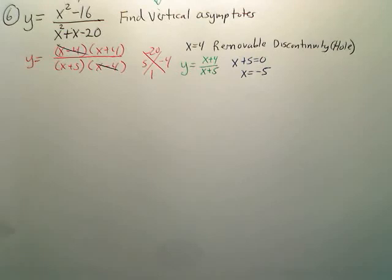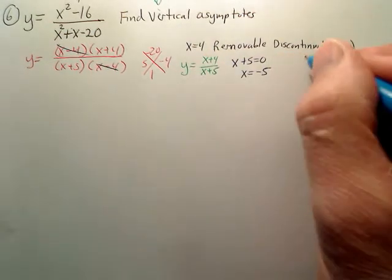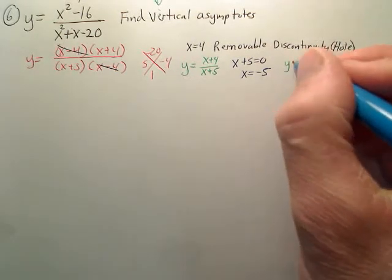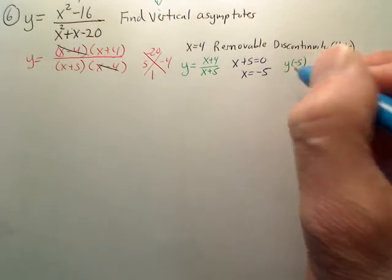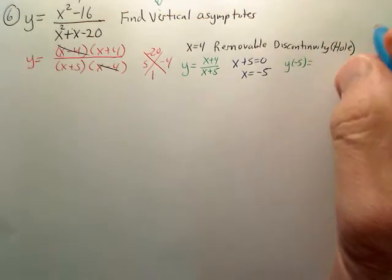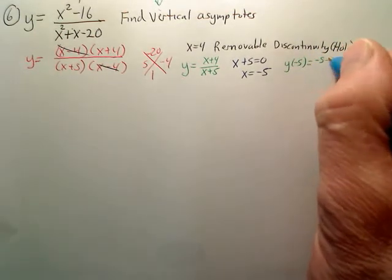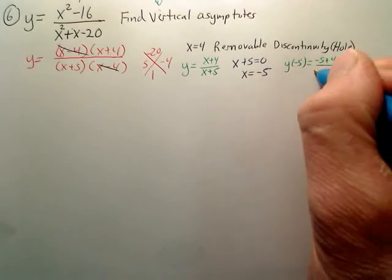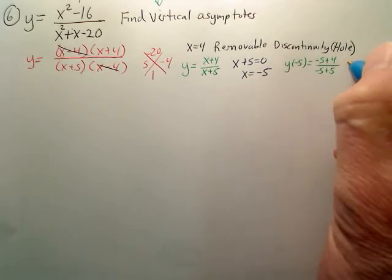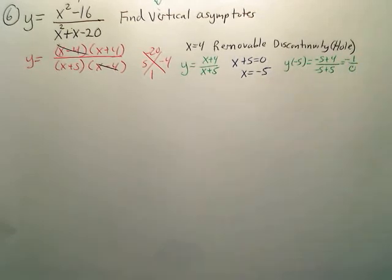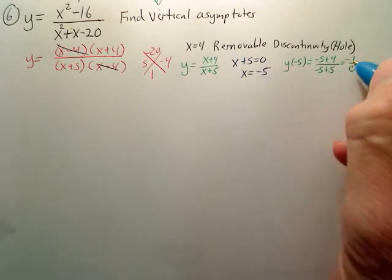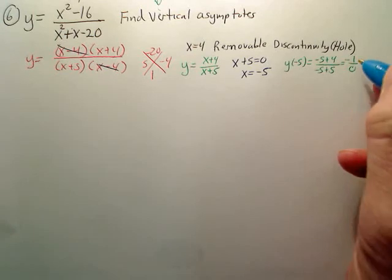Let's check to make sure that's the vertical asymptote. When I plug negative 5 back into the equation, I get (negative 5 plus 4) divided by (negative 5 plus 5), which is negative 1 over 0. So you've got a number over 0. That is a vertical asymptote.